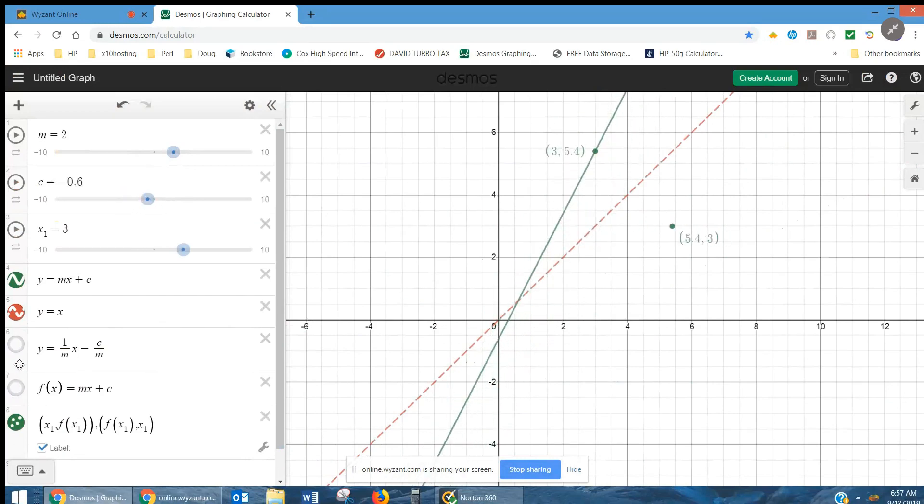And, here is the graph of another line with the function, with the definition y equals one over m times x minus c over m. And, this is your value of k and l, as the question was posed.